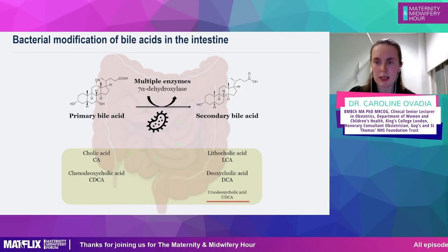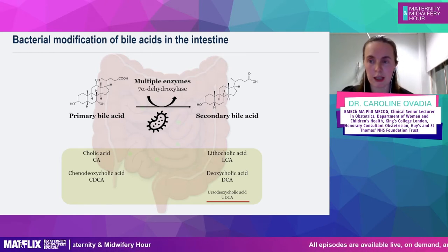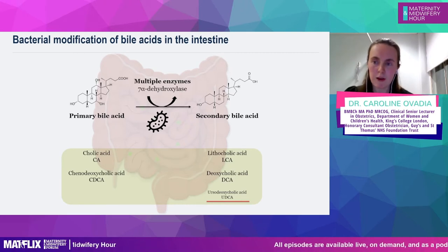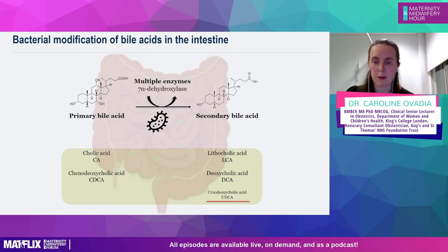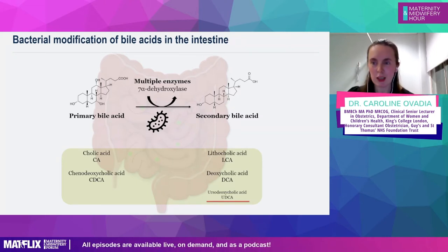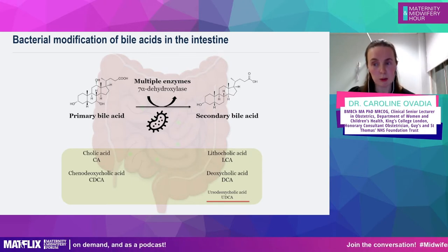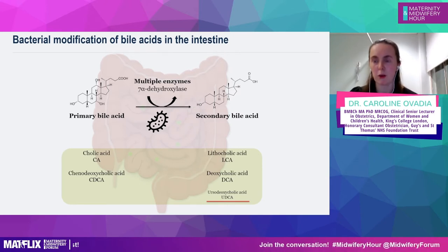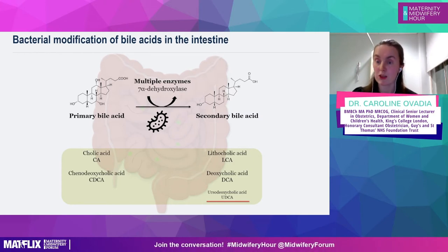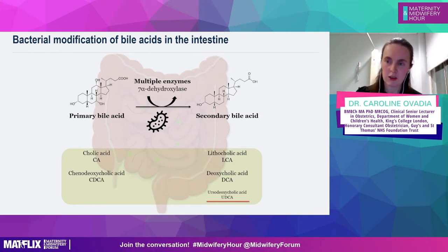Lithocholic acid and deoxycholic acid are the bad secondary bile acids. At the bottom, ursodeoxycholic acid is produced in very small amounts naturally in humans — it comes from bears, which is where 'urso' comes from (the Latin for bear). When patients take urso and you measure bile acids, you are measuring that urso too, but it changes the type of bile acids from unhealthy ones to healthy ones, typically making up about 60% of the total bile acid result.